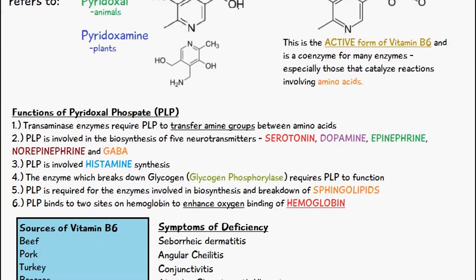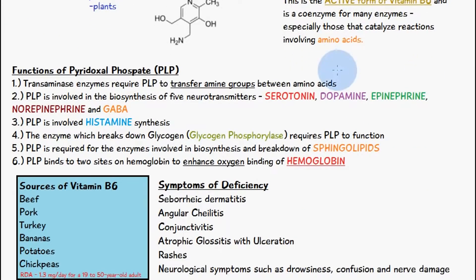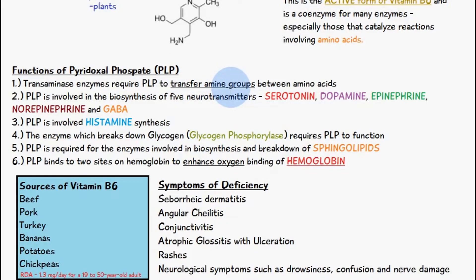A variety of enzymes known as transaminases require PLP to transfer amine groups between amino acids. So without this you wouldn't be able to convert certain amino acids into different amino acids.